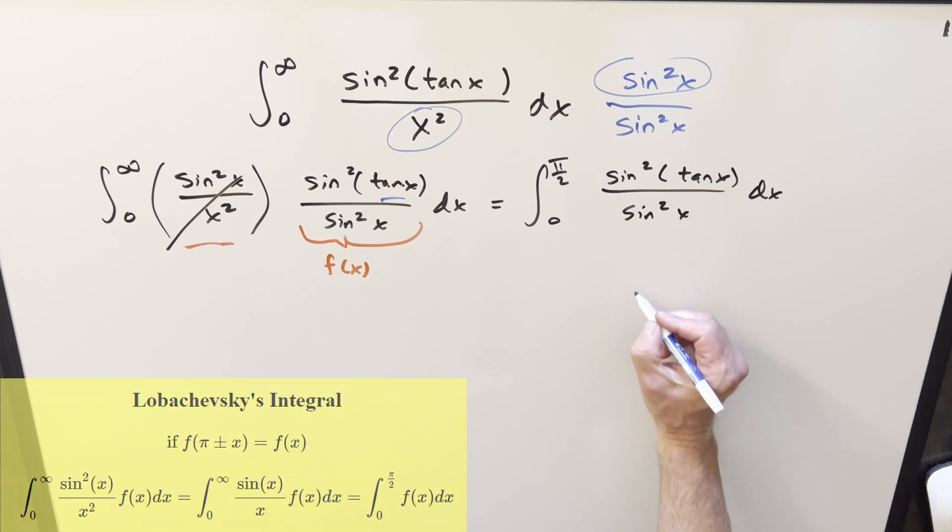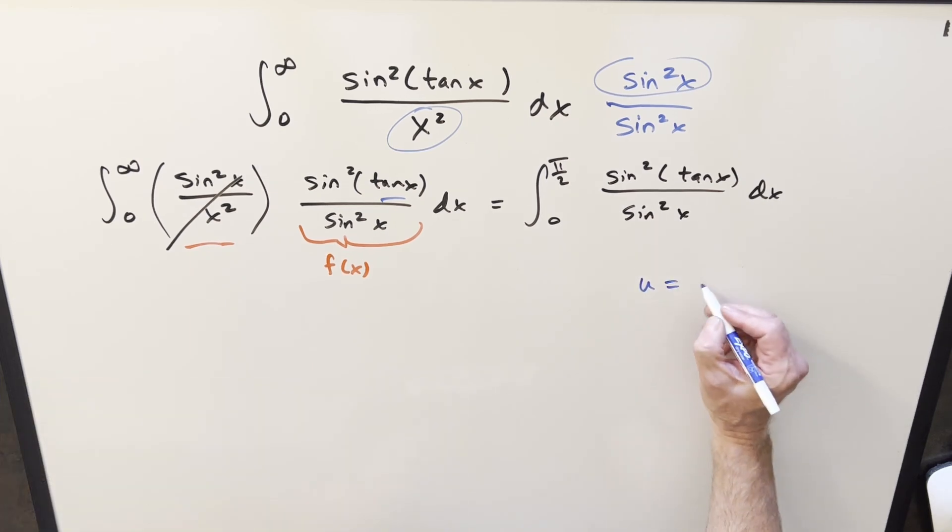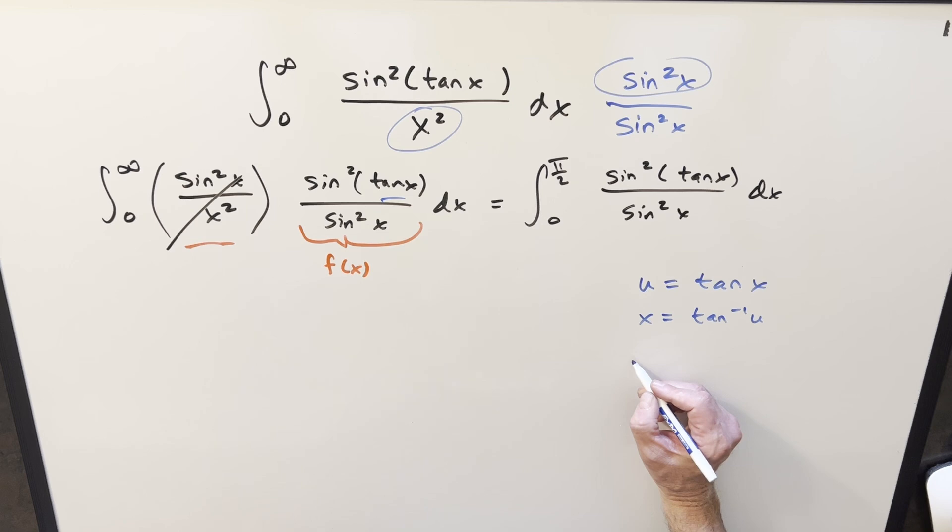This still looks a little tricky. So let's do a u substitution to clean it up. I'll do u equal to tan x. You can do this two ways. The other way is probably better, but I like to show things multiple ways. So let's isolate x and do it this way.